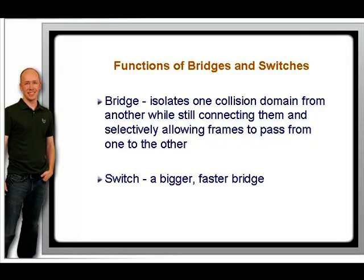Breaking up or segmenting collision domains is necessary to make them small enough so that devices can reliably transmit data. We can segment using routers, but routers are expensive and difficult to configure. In addition, they don't typically have very many ports, so we would need a lot of them to segment effectively. Bridges were developed to address this issue. A bridge isolates one collision domain from another while still connecting them and selectively allowing frames to pass from one to the other.